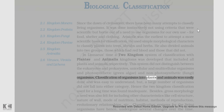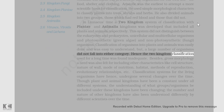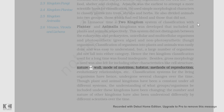Classification of organisms into plants and animals was easily done and easy to understand, but a large number of organisms did not fall into either category. Hence the two-kingdom classification used for a long time was found inadequate. A need was also felt for including other characteristics like cell structure, nature of wall, mode of nutrition, habitat, methods of reproduction, evolutionary relationships, etc.